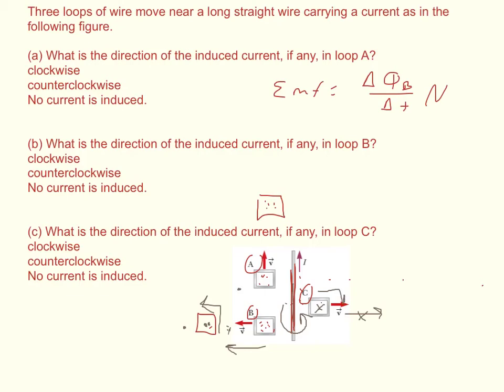Which again, the right hand rule, if you curl your, you point your thumb in the direction that the current would move, then your fingers will curl in the direction that the magnetic field will be created. And so it will have more and more magnetic field going into the loop by the induced current. And therefore it would be clockwise. So B is counterclockwise and A is no current induced.